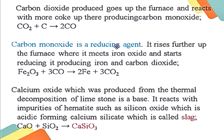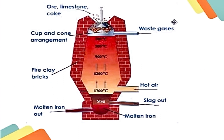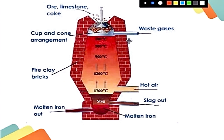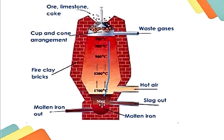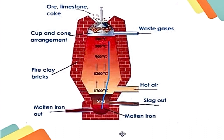Once iron is formed, being very dense, it comes down and settles at the bottom of the furnace. Molten iron, being denser, accumulates at the bottom and can be taken out through the outlet pipeline at the bottom of the blast furnace.